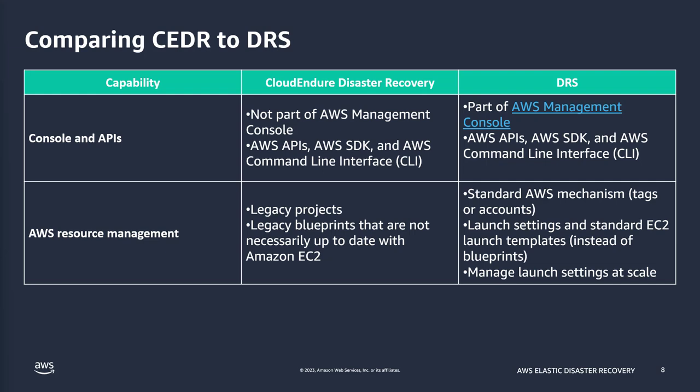You can also manage launch settings at scale. Previously you had to manage each blueprint individually, but with Elastic Disaster Recovery you can manage them at scale and set default launch templates for any new machines that are added. Overall this improves quality of life for configuring DRS after agents have been installed.